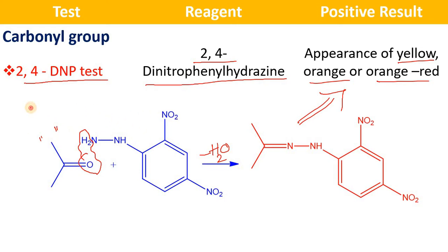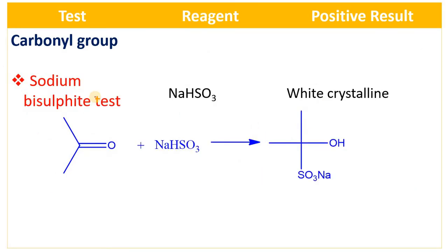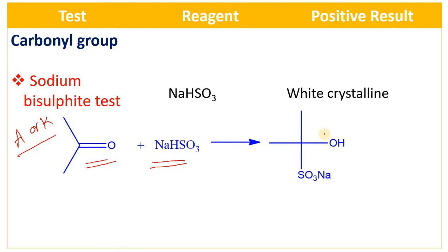By this test you can identify both aldehydes and ketones. The second test is the sodium bisulfite test. The reagent is sodium hydrogen sulfite or sodium bisulfite. When you treat aldehyde or ketone with sodium bisulfite, there is a nucleophilic addition reaction that takes place, resulting in formation of a white crystalline substance — a sodium bisulfite adduct.